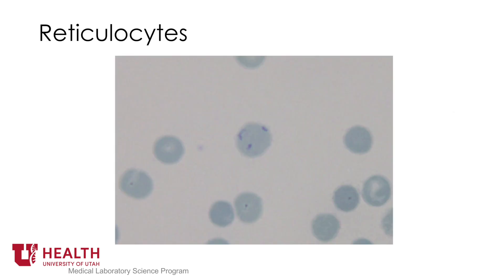Manual reticulocyte count. Reticulocytes are non-nucleated red blood cells which contain ribosomes and mitochondria; a stain for either would distinguish them from mature red blood cells. Red blood cells in suspension are incubated with a super vital stain which simultaneously denatures, aggregates, and stains ribosomes. In smears of cells stained in this manner, reticulocytes contain multiple irregular blue strands, whereas mature red blood cells contain none.